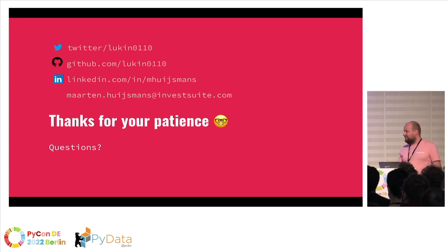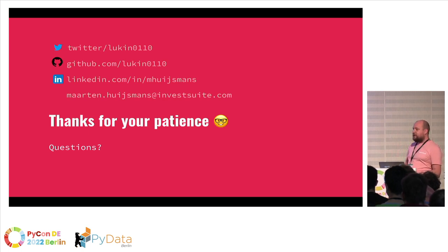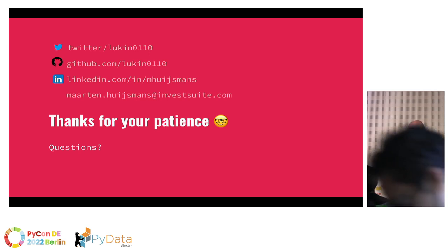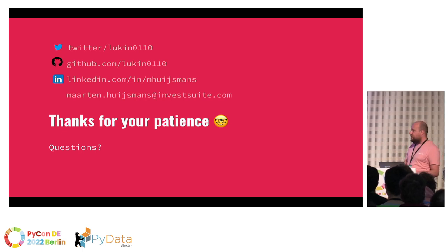Thank you for the great presentation. We do have a lot of questions. One of the most liked questions: does dependency injection solve the issue of the lack of connection pooling for Kafka, Redis, and MongoDB? Yes — dependencies are cached. The first time they're executed, FastAPI keeps track of them, so you have to deliberately say if you don't want caching. Another question: would you use FastAPI again or go with Django REST framework? I would use it again. The reason we use FastAPI everywhere is that not all microservices require a database, and then Django is a bit of overkill. But for an MVC application, I would consider Django.